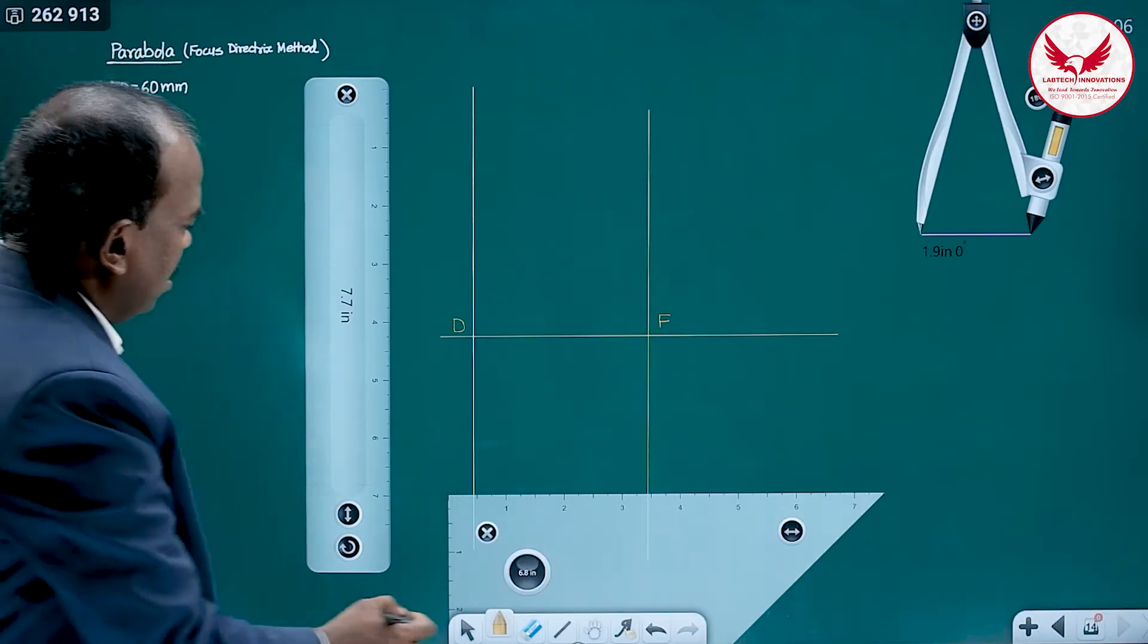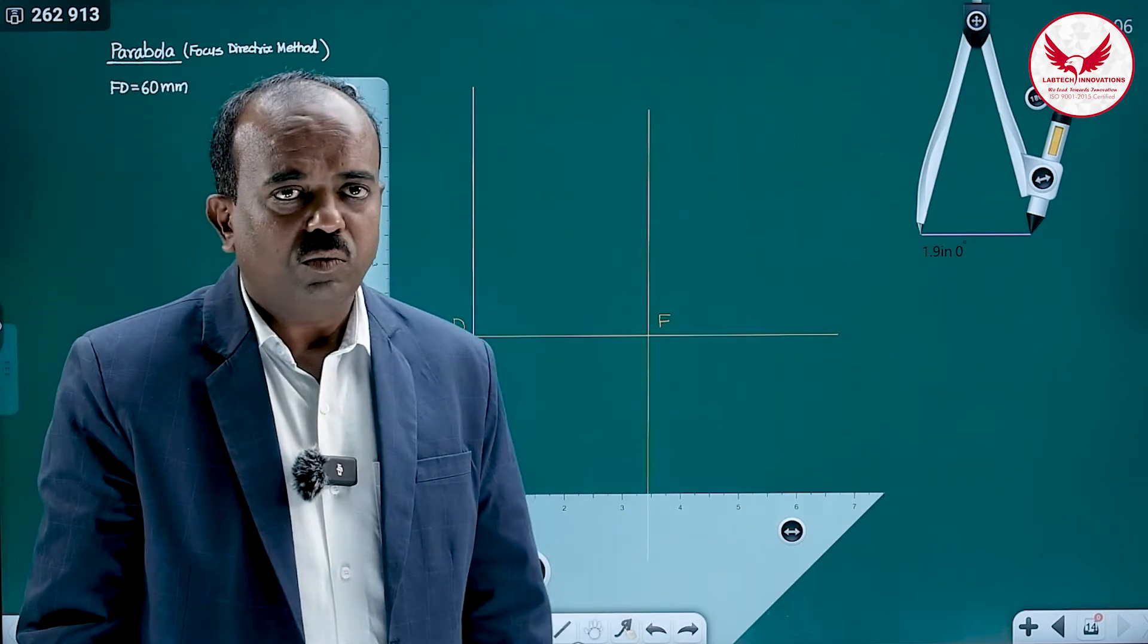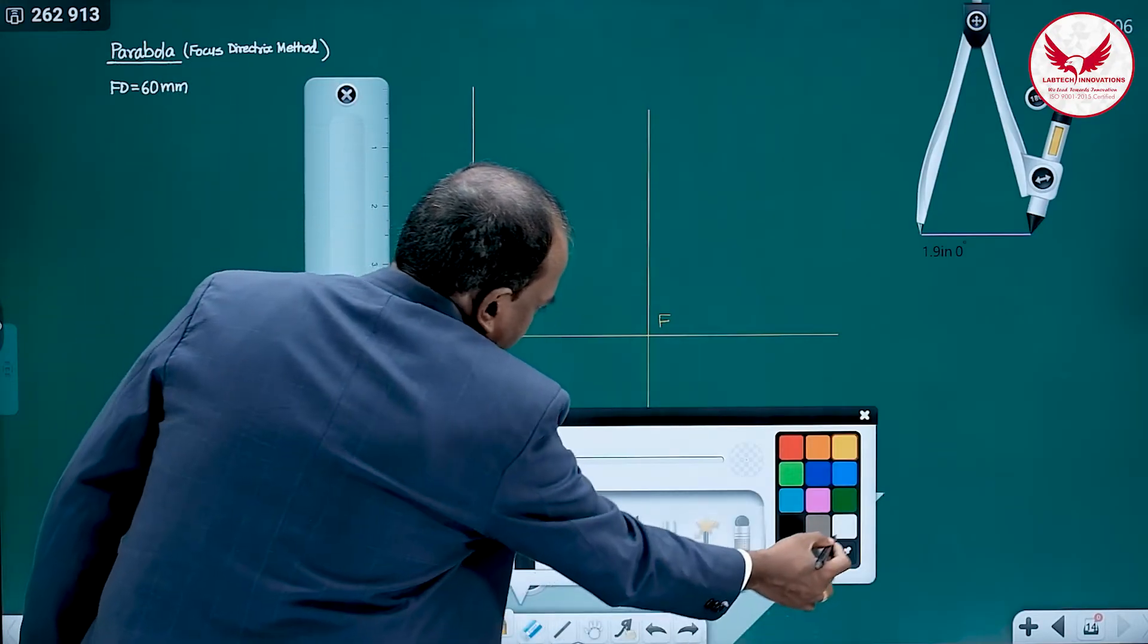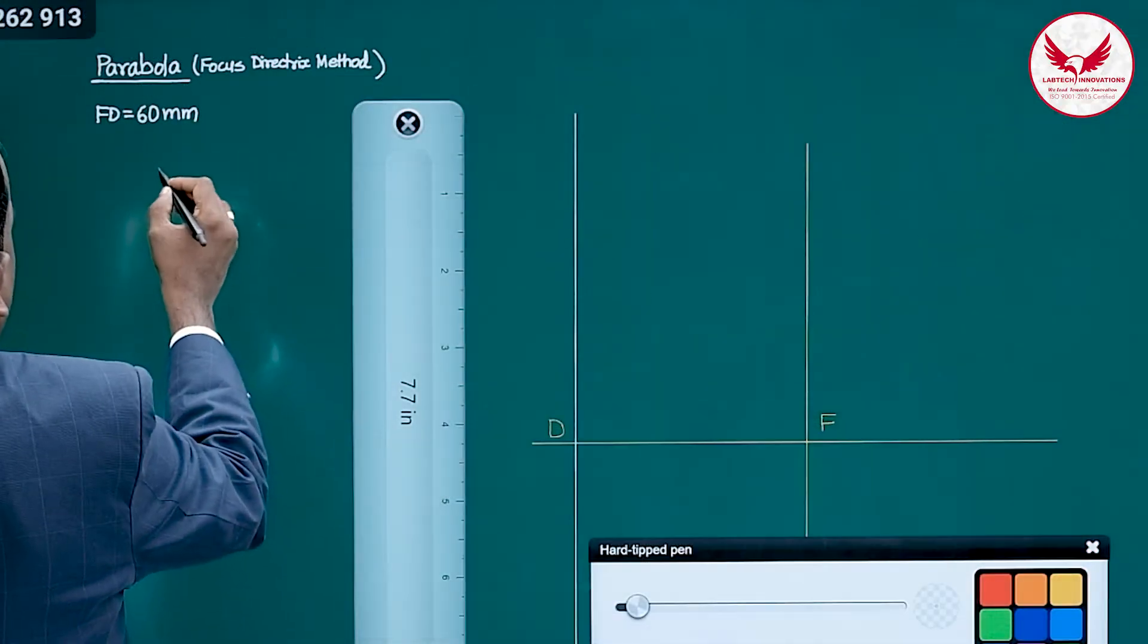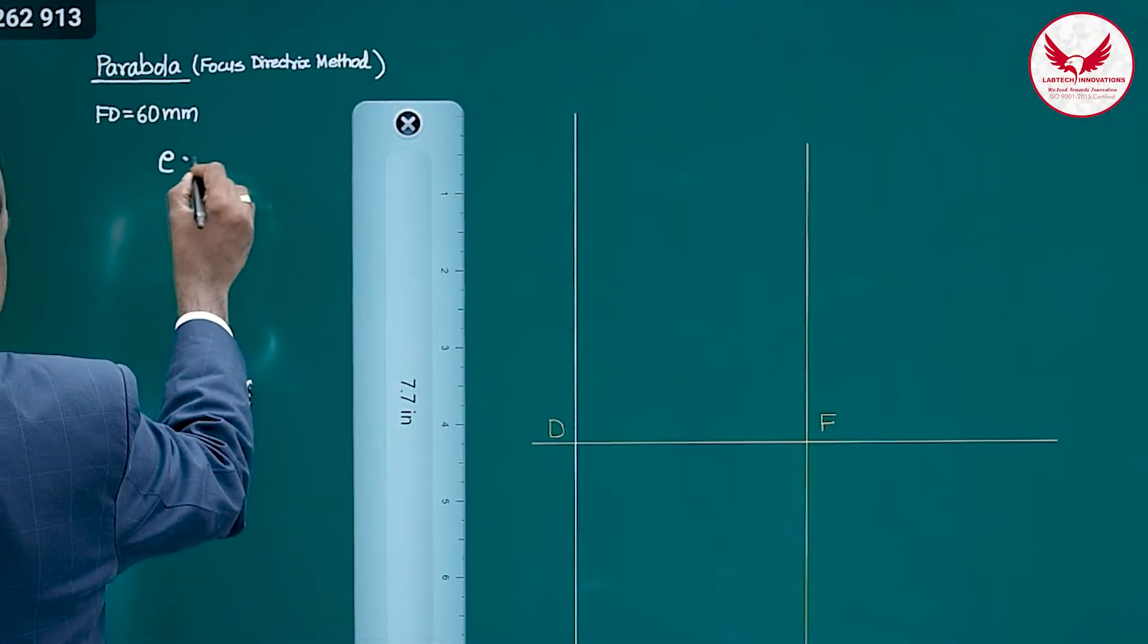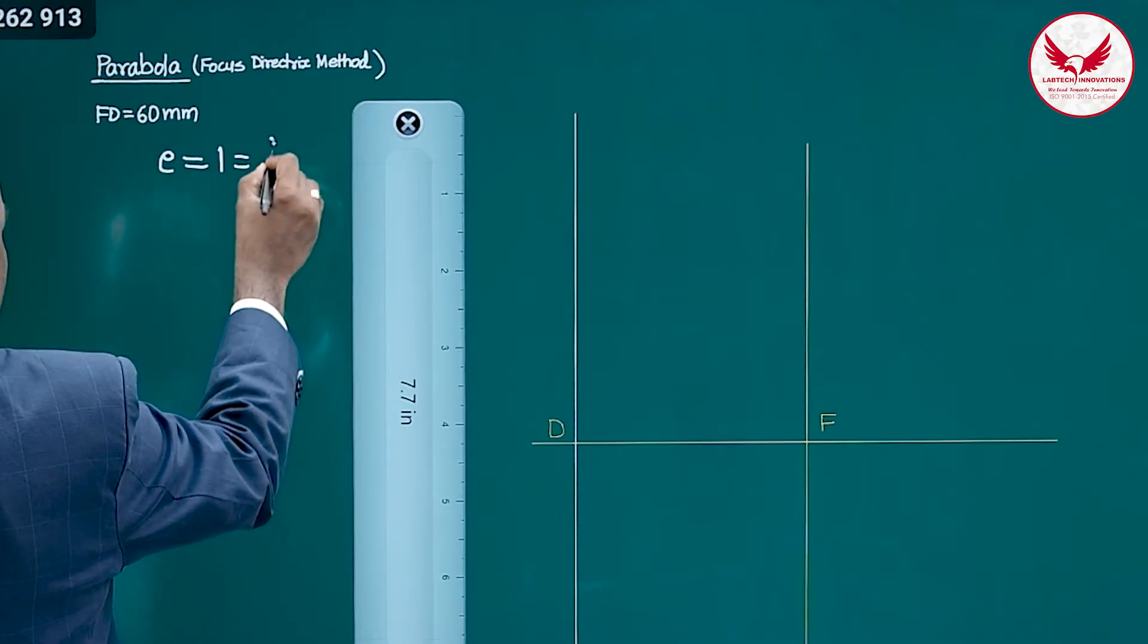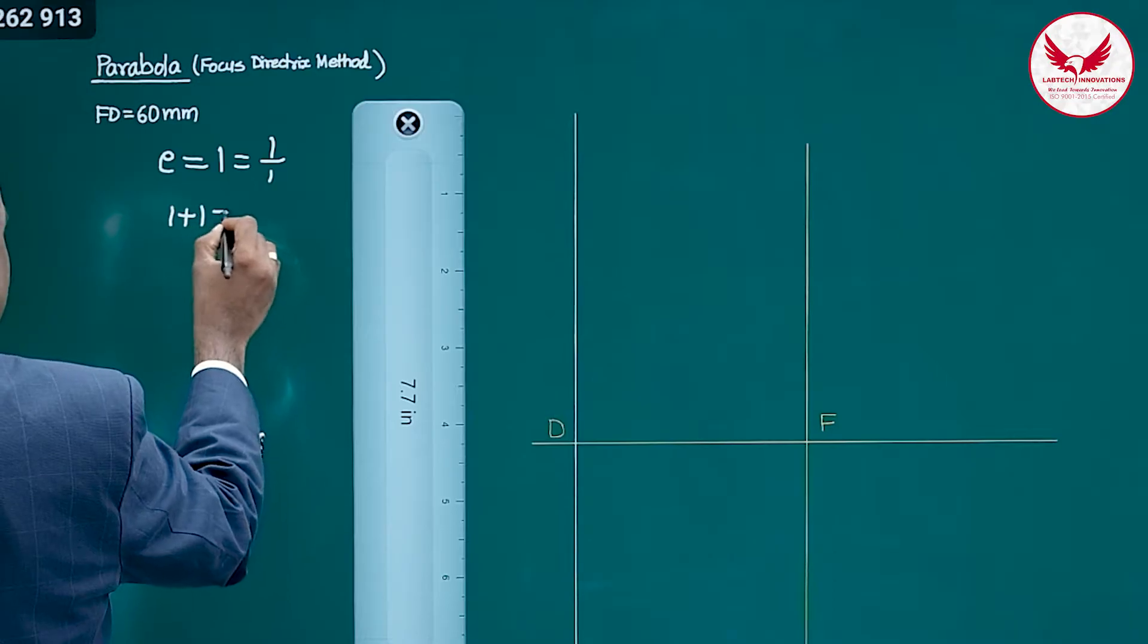While drawing the parabola, for the parabola always its eccentricity is known. For the parabola eccentricity is 1. And we can write this 1 as 1 by 1 and numerator plus denominator its addition is 2.